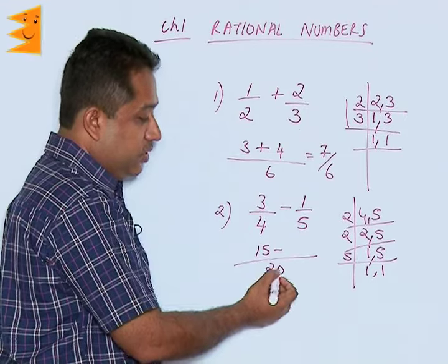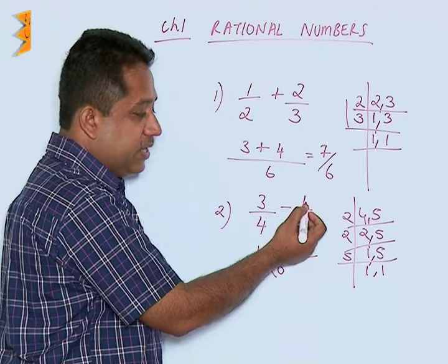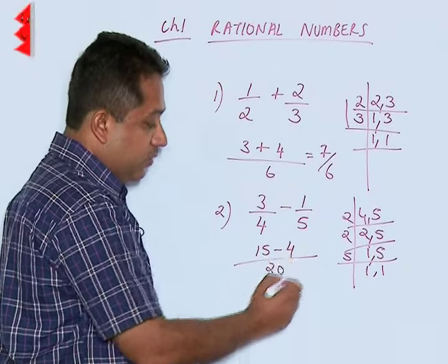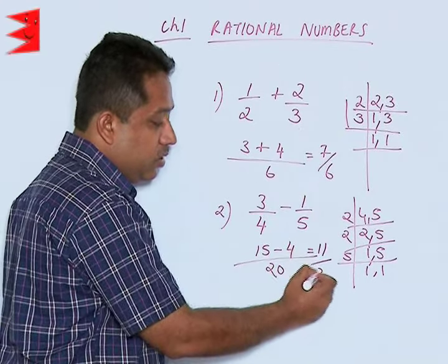5 goes 4 times, 4 is multiplied by the numerator here, that is 1. So we get 4 here. So 15 minus 4, we are going to get 11 upon 20.